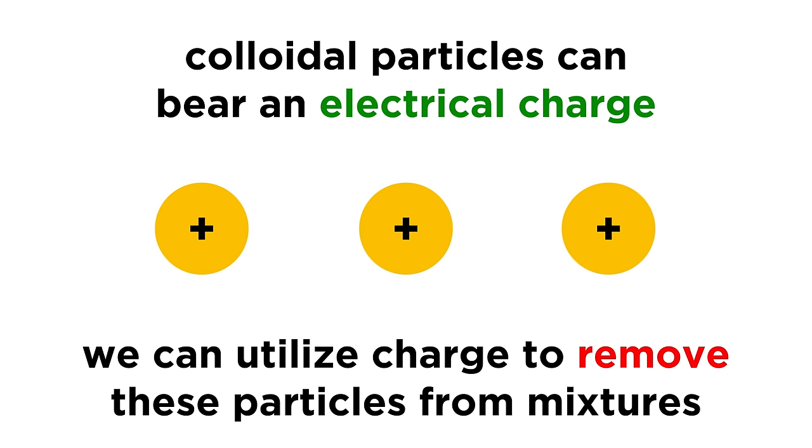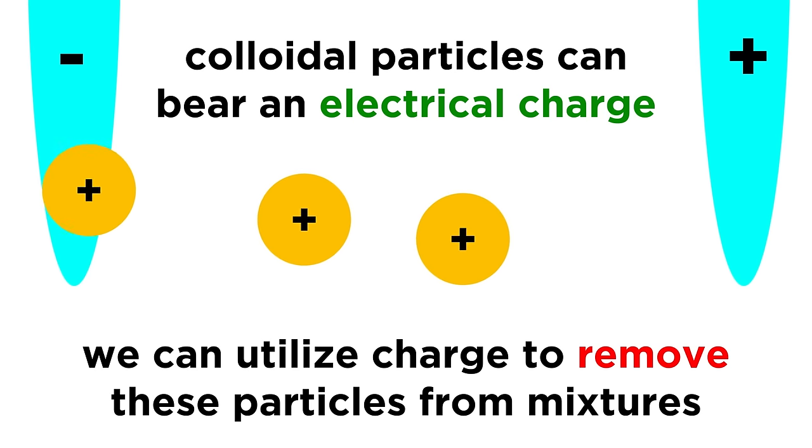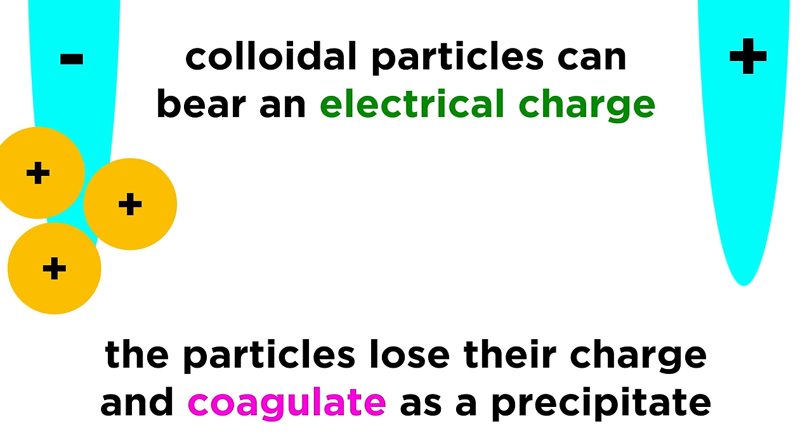We take advantage of the formal charges on colloidal particles to remove them from a variety of mixtures. We can place charged electrodes in a colloidal dispersion, and the charged colloidal particles will migrate to one of the electrodes. Once this occurs, the colloidal particles lose their charge, and consequently will coagulate as a precipitate.